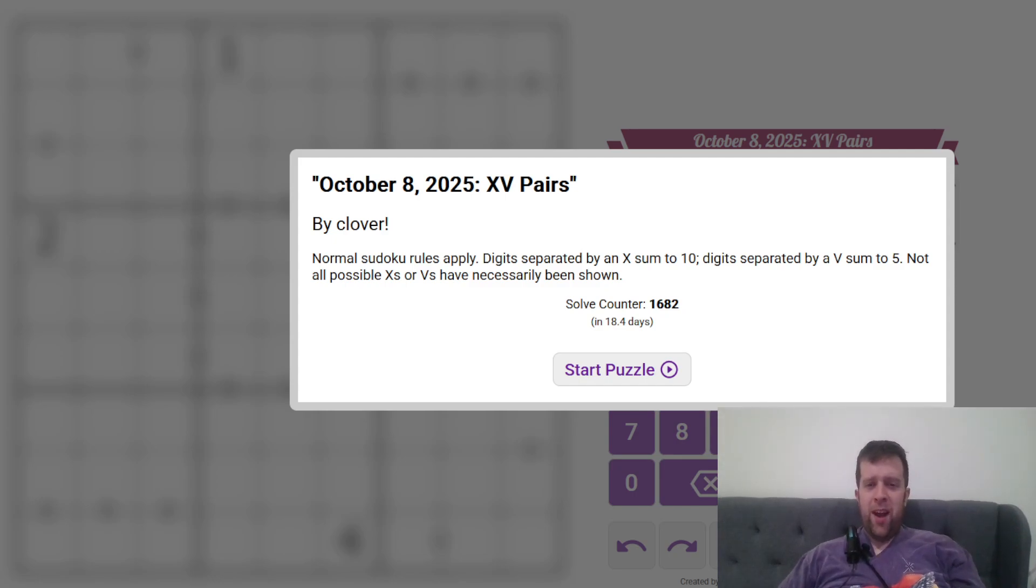Damn, been a long time since I recorded one of these. So many things have happened and none of them can I tell you about legally. Don't worry, that's not incriminating in some way. This is an XV Pairs Sudoku. Oh yeah, hang on. We're at GAS, Genuinely Approachable Sudoku.